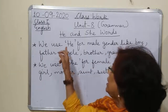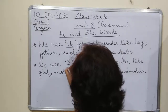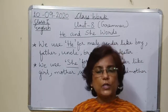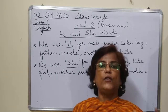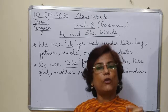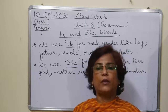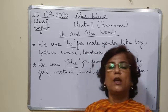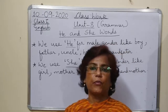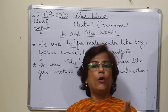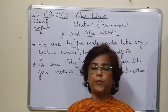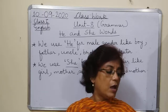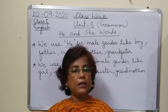He and she — these two particular words are used only for persons. Sirf unke liye yeh words use kiye jaate hain. We do not use he or she for birds or animals. Whether they are male or female, birds or animals jo hain — unke liye hum he and she nahi use karte. We use 'it' for them — whether it is a male animal, male bird, or female animal, female bird. He and she are used only for persons.